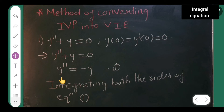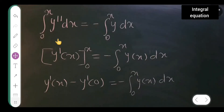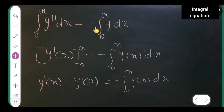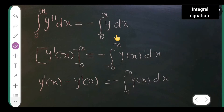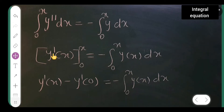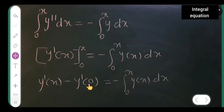Now integrate both sides of equation 1 from 0 to x with respect to x. The left side gives the integral from 0 to x of y'' dx, which equals y'(x) evaluated from 0 to x. The right side is minus the integral from 0 to x of y(x) dx. Applying the limits: y'(x) minus y'(0) equals minus the integral from 0 to x of y(x) dx.